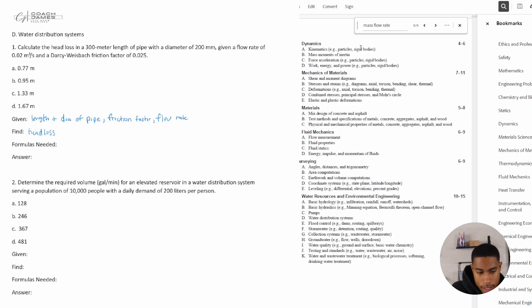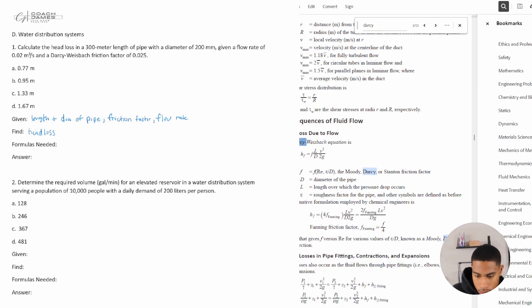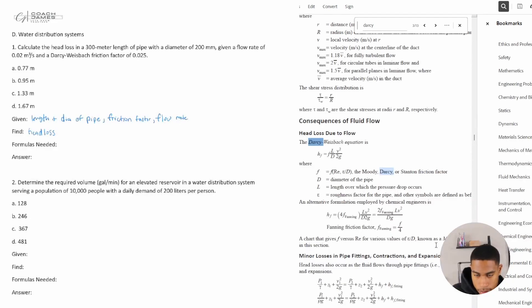And they want us to find the head loss, I'm assuming due to flow. So I don't know what this Darcy whatever, but I'm assuming it's important, so I'm going to look up Darcy. Let's just look up Darcy to start: head loss due to flow. Like we saw a similar problem in one of the previous examples, but let's check out the information that we're given.